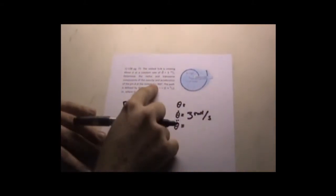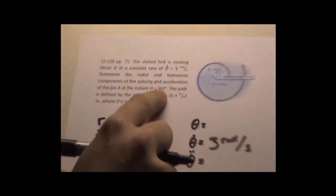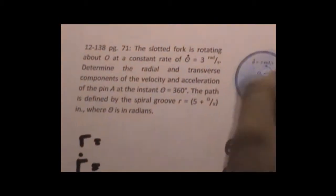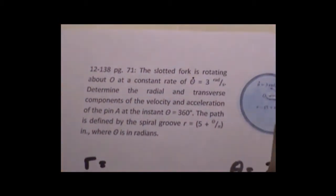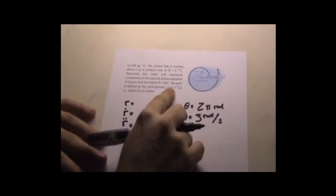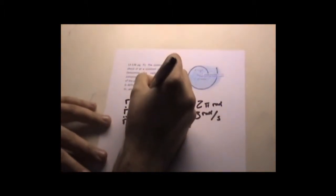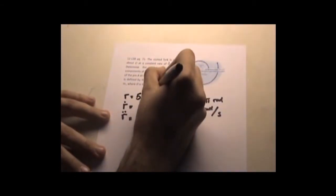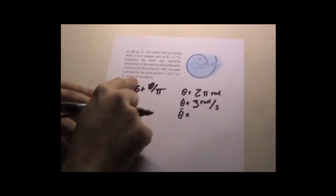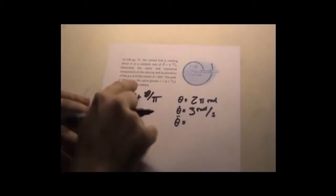Determine the radial and transverse components of the velocity and acceleration of the pin at A at the instant θ equals 360 degrees. We do pi radians here, so we'll put that as 2π radians. The path is defined by the spiral groove R equals 5 plus θ over π, 5 plus θ over π inches where θ is in radians.